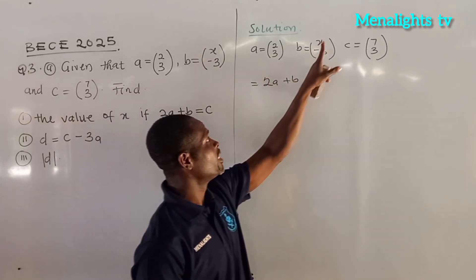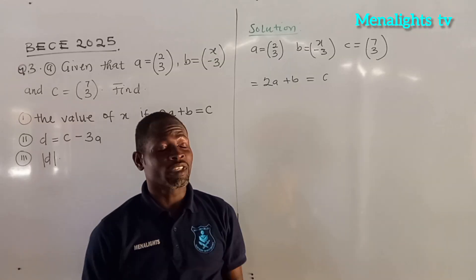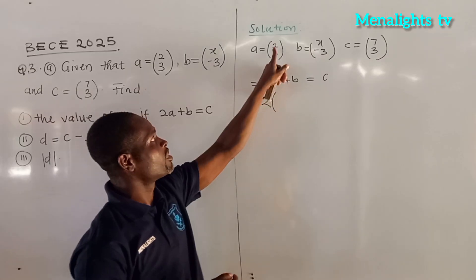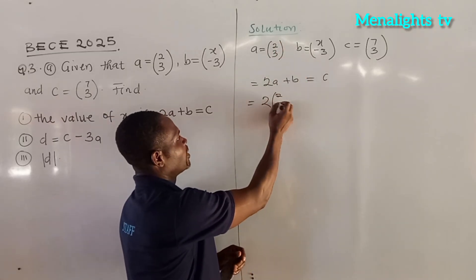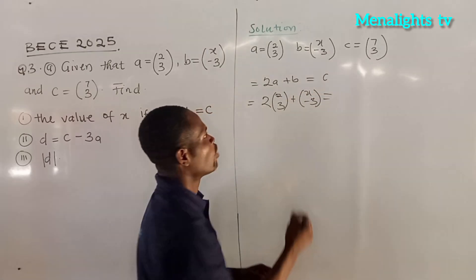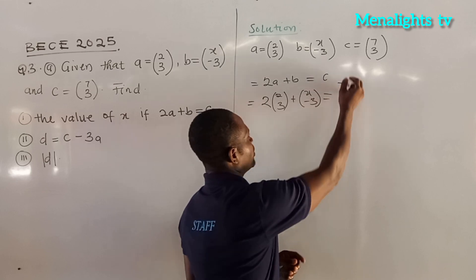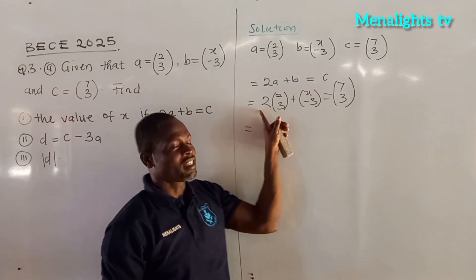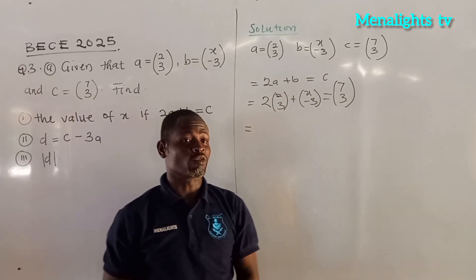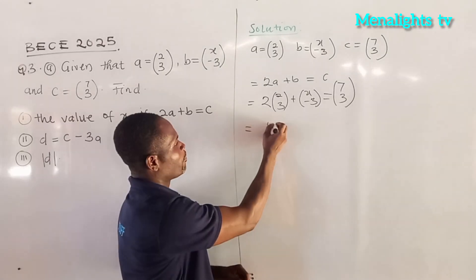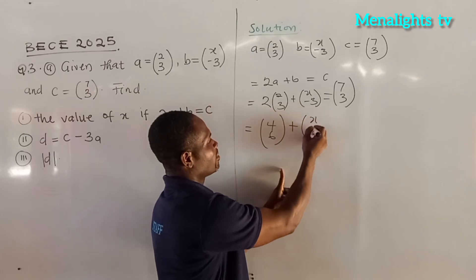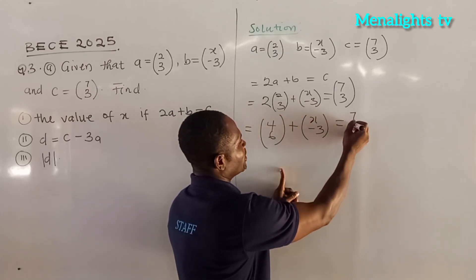We know our a is (2, 3), b is (x, -3), and c is equal to (7, 3). So 2a means 2 times (2, 3). In place of a, we are putting the values of a. Then plus b which is (x, -3), all should be equal to (7, 3). So 2 times 2 gives us 4, and 2 times 3 gives us 6, then plus bracket x, -3, which equals (7, 3).